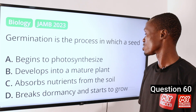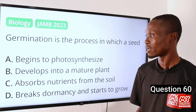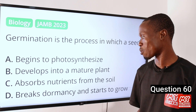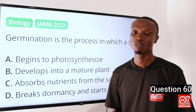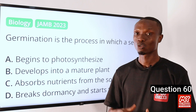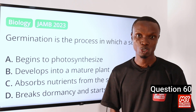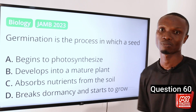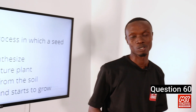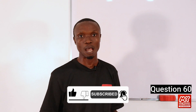Question 60. Germination is the process in which a seed: A. Begins to photosynthesize. B. Develops into a mature plant. C. Absorbs nutrients from the soil. D. Breaks dormancy and starts to grow. Germination is defined as the process by which a seed breaks dormancy and starts to grow into a new plant. Germination occurs when a seed is exposed to favorable environmental conditions such as proper moisture, oxygen availability, and suitable temperature. So that makes option D the correct option. I believe you are enjoying this video content — please do not forget to hit the like button, click on the subscribe button, and tap on the notification bell to get informed as soon as we release the next videos.